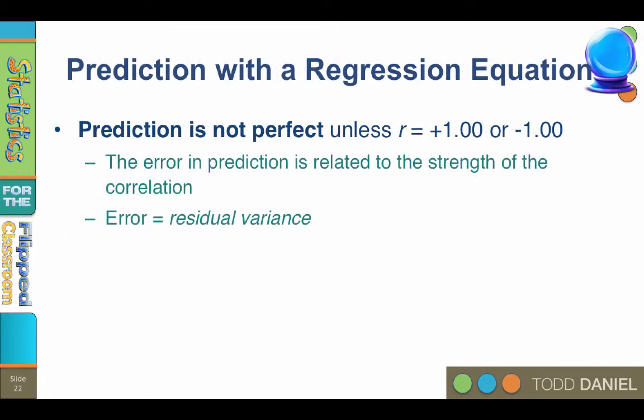Although you can use regression equations for prediction, the predicted y-hat value is not perfect, unless your correlation is a perfect positive one or negative one. There will always be some error or residual variance in your predictions. The amount of residual variance will be related to the strength of the correlation — stronger correlations equal less error.